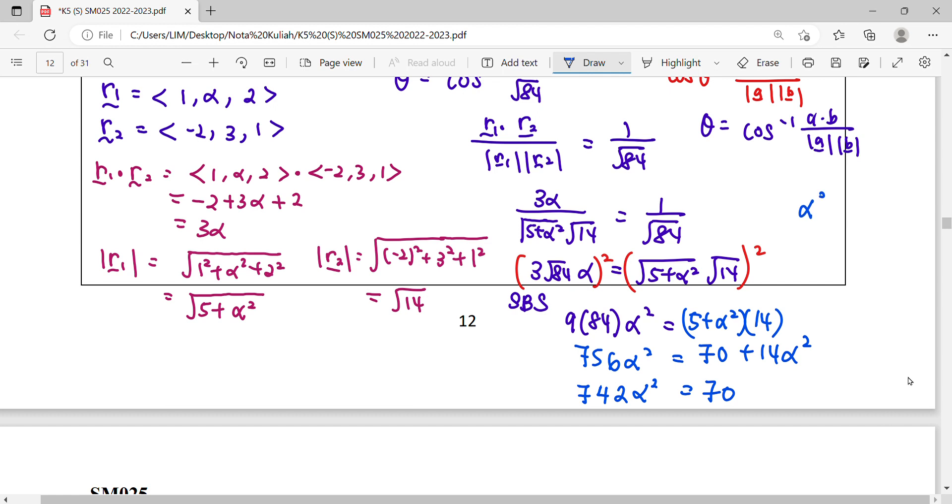So lastly alpha equals to 70 over this. So alpha can be positive negative square root under answer.